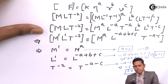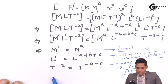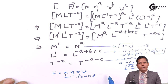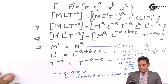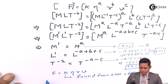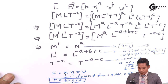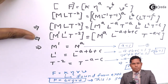Substituting the values a equals 1, b equals 1, c equals 1 back into the original equation, we get F equals k times eta to the power 1, r to the power 1, v to the power 1. The constant k is found from experiment and its value is 6 pi. So finally, Stokes' formula comes out to be F equals 6 pi eta r v. This is Stokes' Law. That is all for this video, thank you.